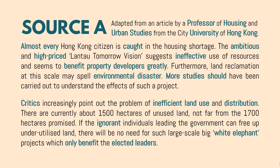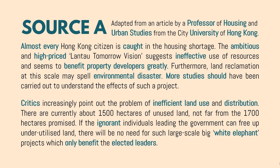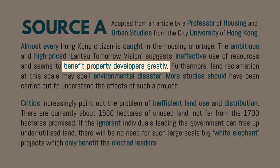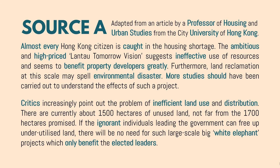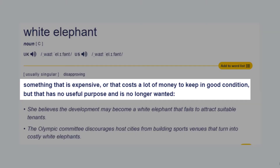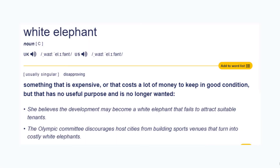They claim that the executive director is an ignorant individual leading the government, and it only benefits the elected leaders. So on one hand, we have people who benefited — the elected leaders as well as the property developers. On the other hand, we have the victims, which are the Hong Kong citizens. Let's take a look at the term 'white elephant.' According to the Cambridge Dictionary, a white elephant is something that is expensive, costs a lot of money to keep in good condition, has no useful purpose, and we don't really need it.